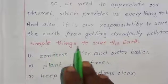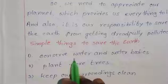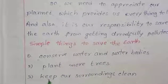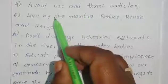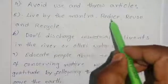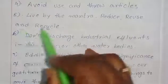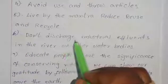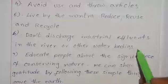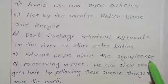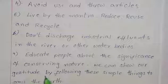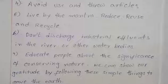Simple things to save the Earth: conserve water and water bodies, plant more trees, keep our surroundings clean, avoid use-and-throw articles, live by the mantra reduce, reuse and recycle, don't discharge industrial effluents in rivers or other water bodies, and educate people about the significance of conserving nature. We can show our gratitude by following these simple things to save the Earth.